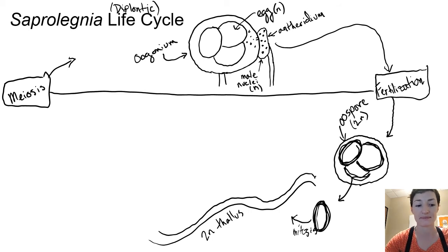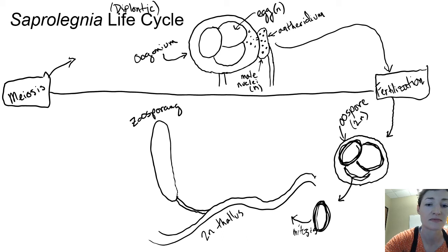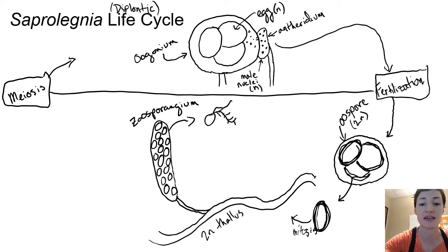So it's a diploid thallus and we call it a thallus because it's not differentiated into different tissues. This diploid thallus can reproduce asexually by making a structure called a zoosporangium. That zoosporangium makes spores inside called zoospores, and they're called zoospores because they're swimming spores so they move around. They do that with their two flagella. Those zoospores are diploid just like everything else down here and they can grow by mitosis into a thallus.